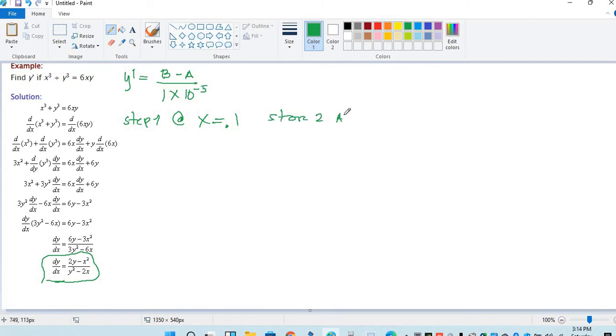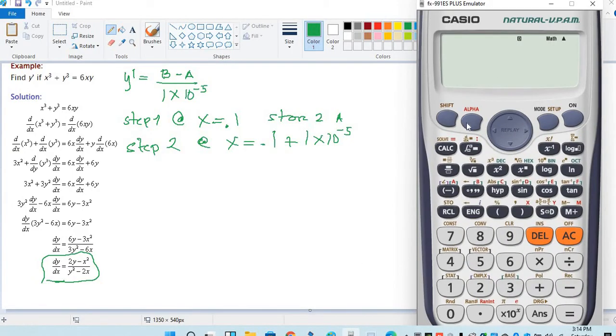For step 2, input the equation again, comma y. We are solving for y. Shape, solve, so x is 0.1 plus 1 times 10 raised to negative 5, equal, solve for y, equal.